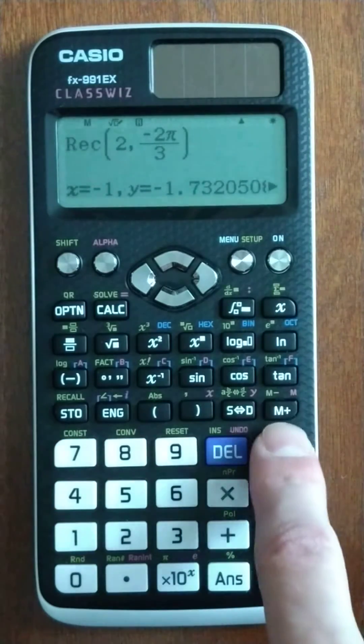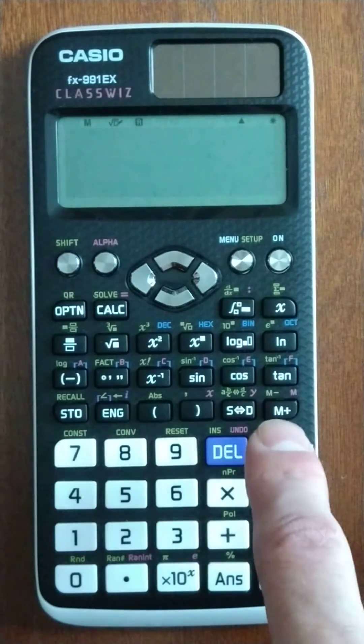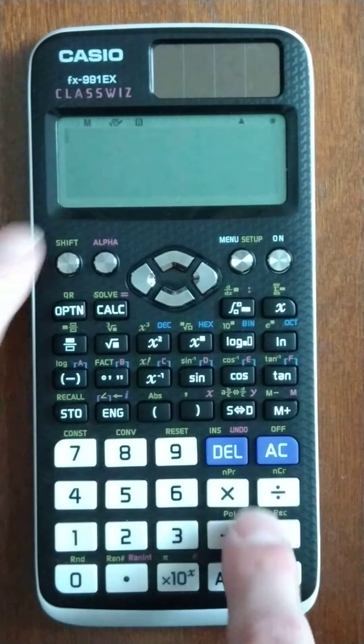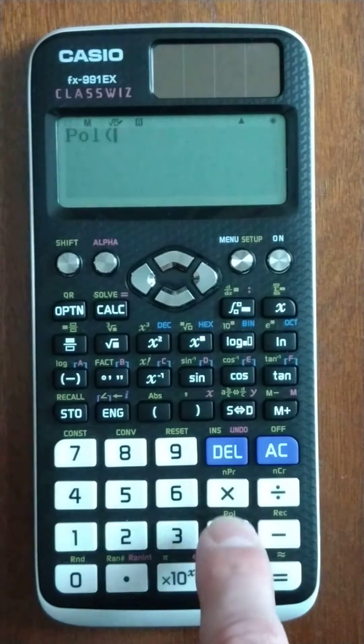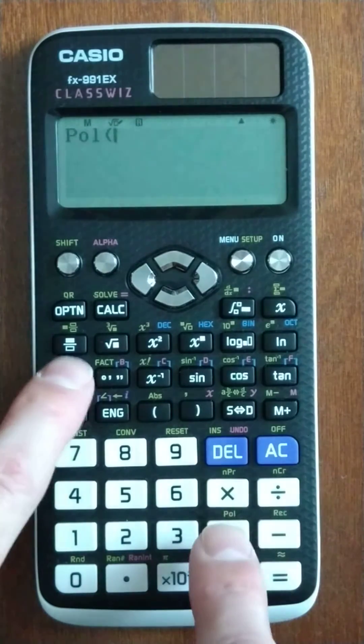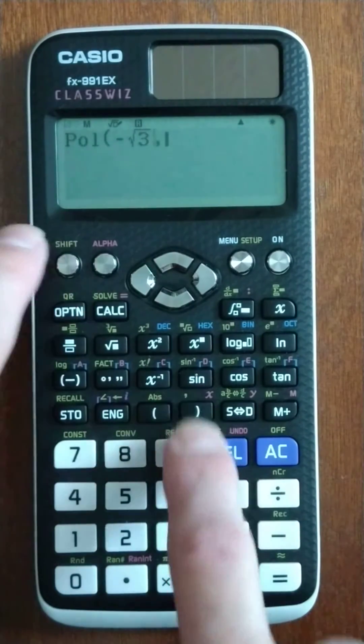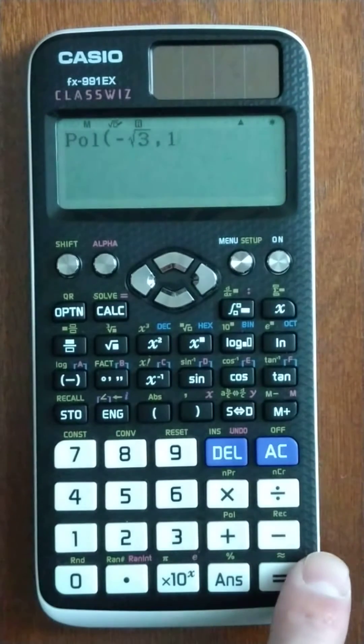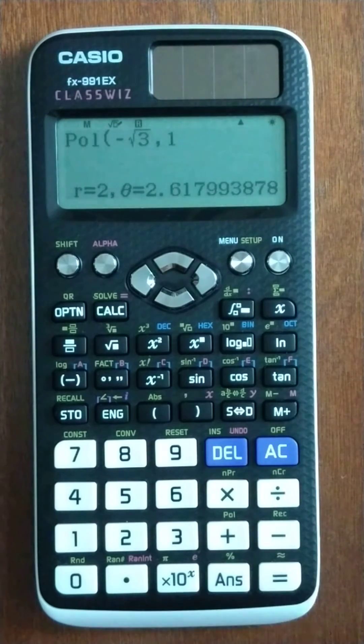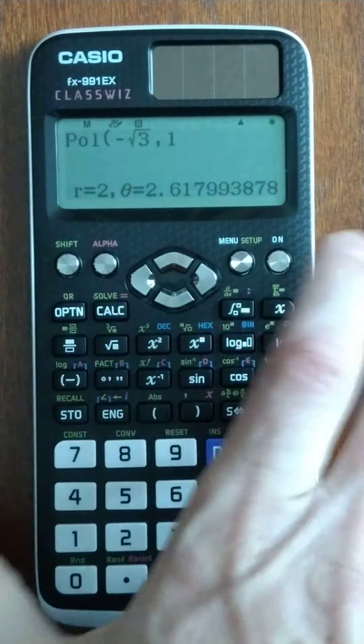If you want to go the other way, let's say we want to convert rectangular to polar. We just do shift, we hit this polar. We do negative square root of 3, comma, 1. And we get our polar. So, 2 at an angle of 2.62 radians.